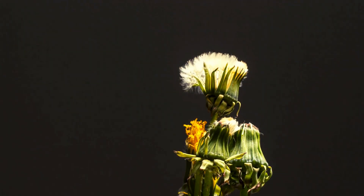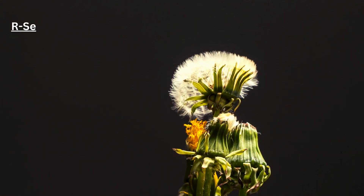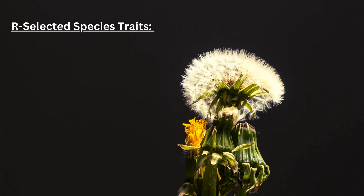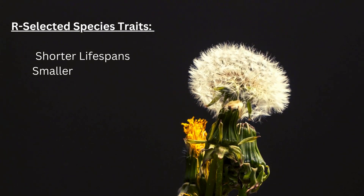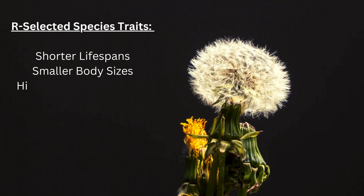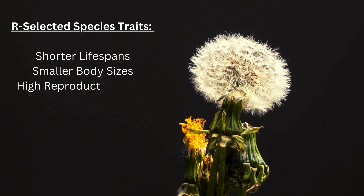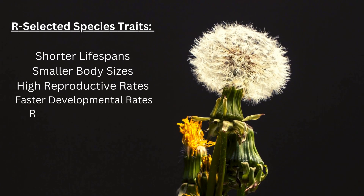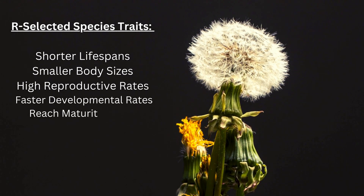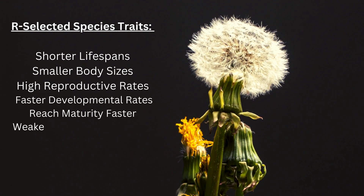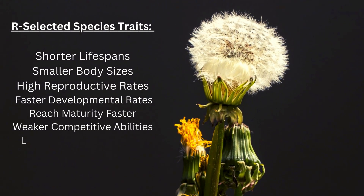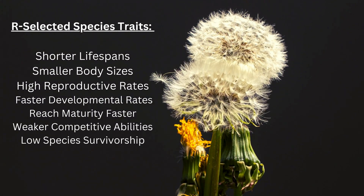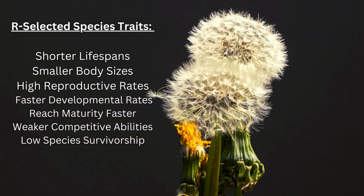Thinking this way, we can again understand the traits of R-selected species we have at hand. With shorter lifespans, smaller body sizes, and large reproductive capacity to breed, R-selected species will have faster developmental rates, reach maturity quicker, and have weaker competitive abilities indeed.